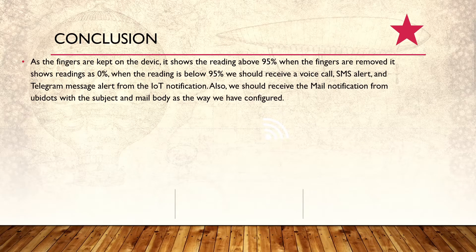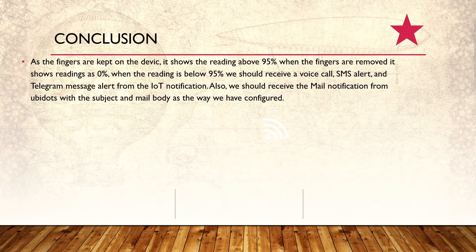Conclusion: as the fingers are kept on the device, it shows the reading above 95%. When the fingers are removed, it shows the reading as 0%. When the reading goes below 95%, we should receive a voice call, SMS alert, and Telegram message alert from the IoT notification. We should also receive mail notifications from ubiquitous, with the subject and mail body as configured.